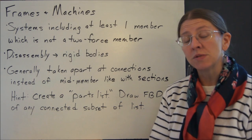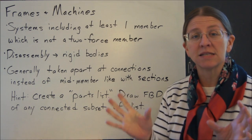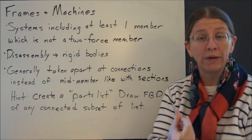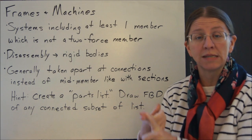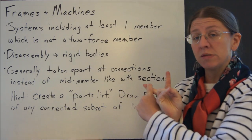Now that we're dealing with systems, there are two different classes of systems that we will deal with: trusses, which we already did with both the method of joints and the method of sections, and then frames and machines.